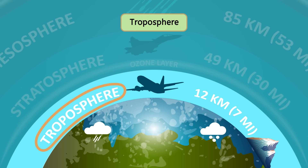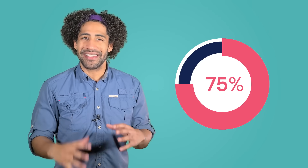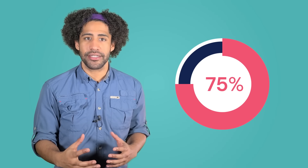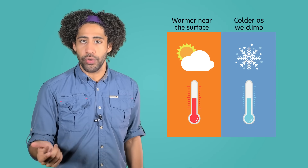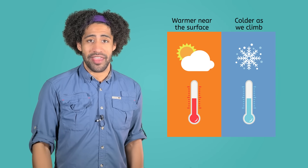This layer contains all the air that living things need to survive, and it's where most of our clouds and weather are formed. The troposphere contains most of the gas in our atmosphere, about 75%. That dense concentration of gases creates a stable layer that supports the flight of birds and planes. Air pressure is at its highest at the ground and decreases as we travel away from the surface. The temperature in this layer is warmer near the surface and colder as we climb. However, this isn't the case for every layer in the atmosphere.